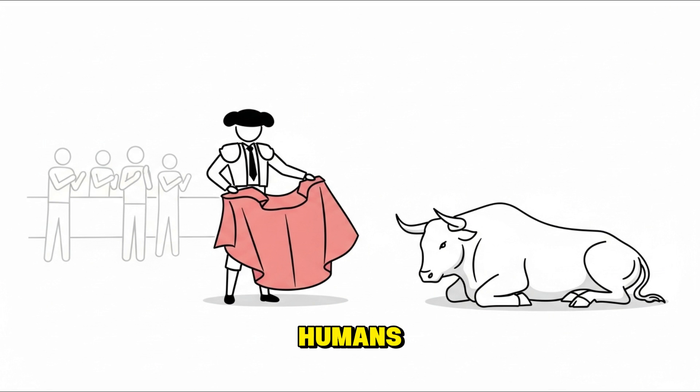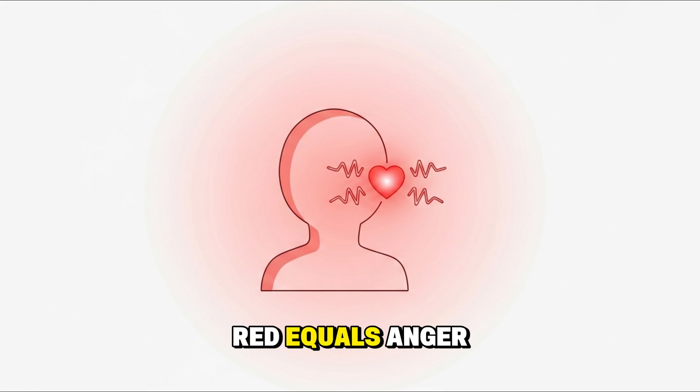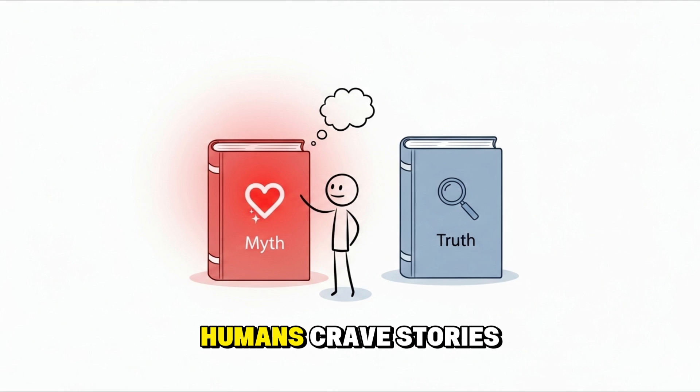The red cloth is for humans. It dramatizes the scene for the crowd. But people still refuse to believe it because the story is too iconic to doubt. Red equals anger. It's symbolic. We're emotionally attached to the image. It satisfies our need for meaning and drama. Humans crave stories that feel poetic, not sterile. And in that craving, myths become stronger than truth.